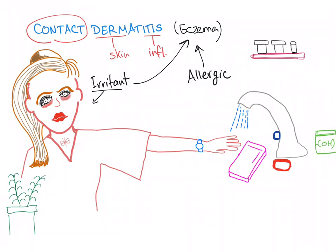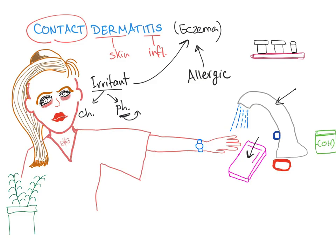In irritant contact dermatitis, the irritant can be either chemical or physical. Chemicals such as soapy water, rubbing alcohol, household cleaners, solvents, fertilizers, pesticides, shampoos, bleach, detergent, etc. Physical irritants include plants, which can sometimes be a physical irritant, and also humidity can lead to the physical subtype of irritant contact dermatitis.